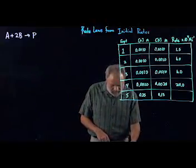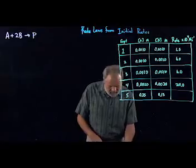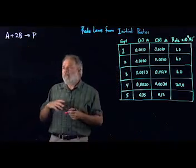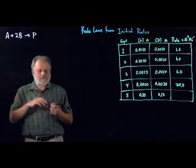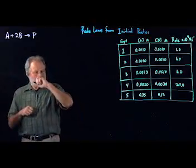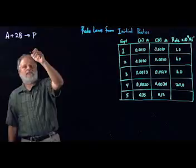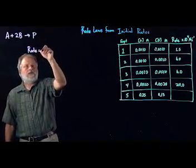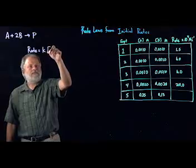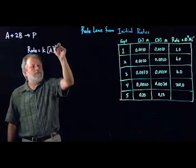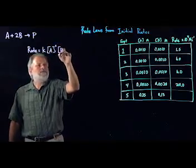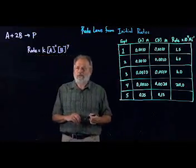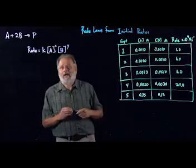The first thing we need to do is write down the general expression for the rate law. If the chemical reaction is a molecule of A and two molecules of B, then the rate is going to be a constant times A to some power, we do not know the power, and B to some power, could be a different power, and again we don't know what that power is going to be.